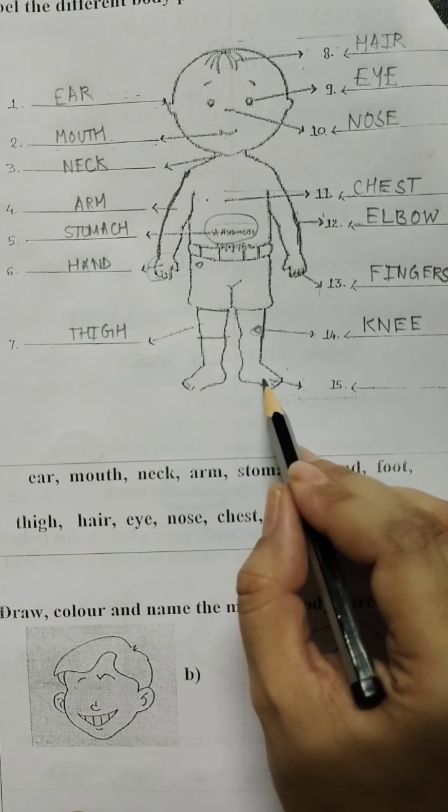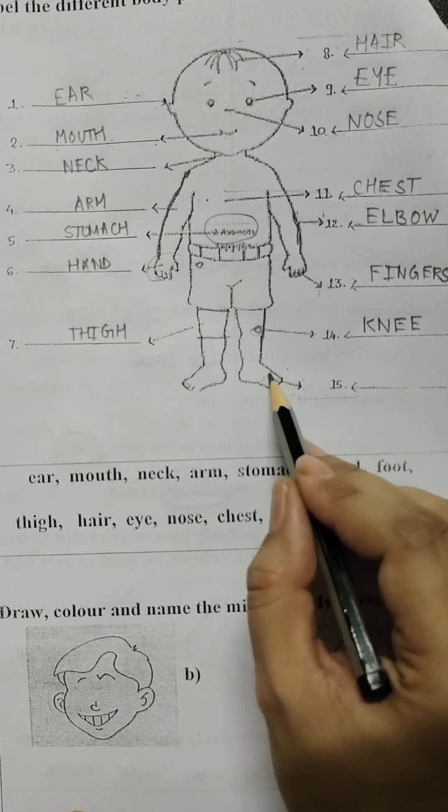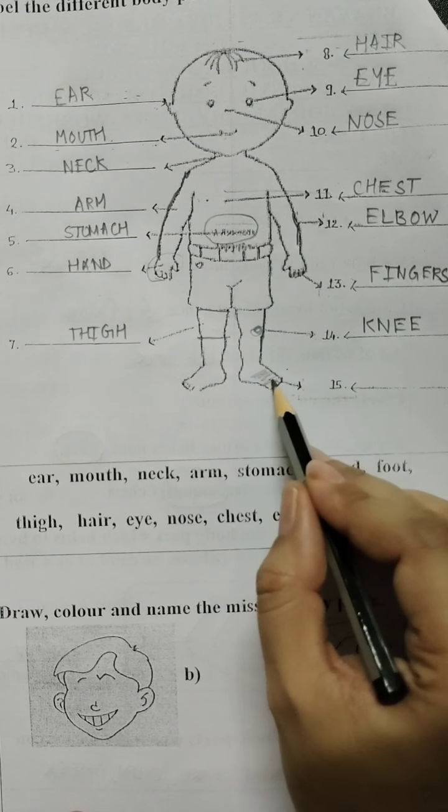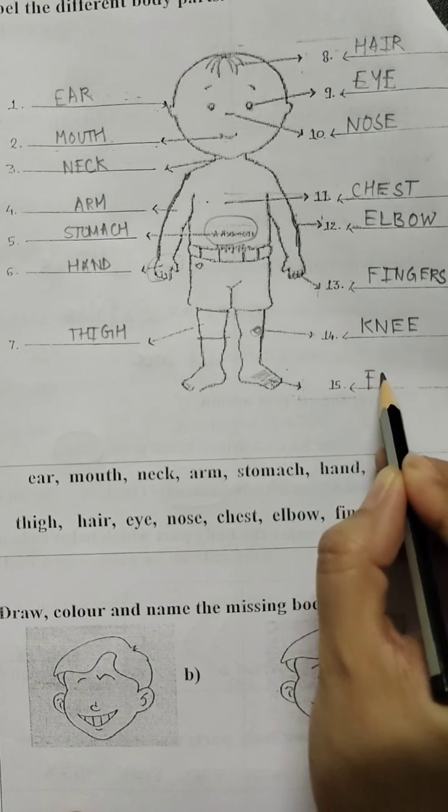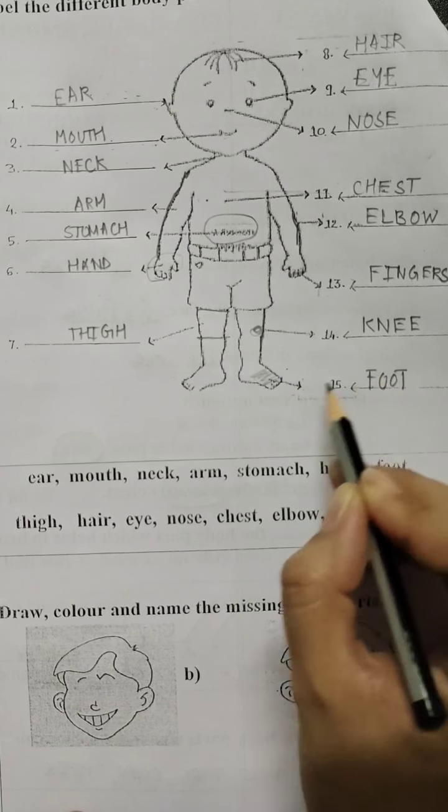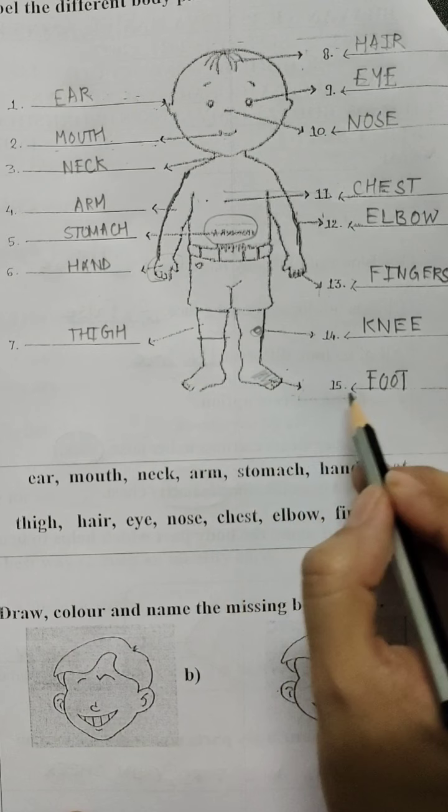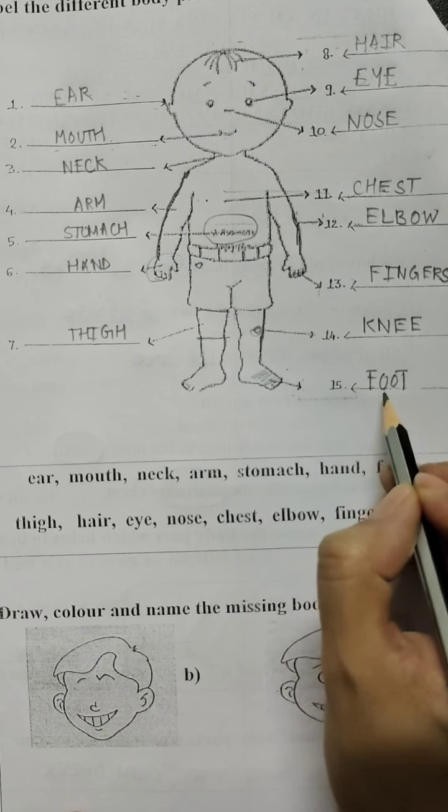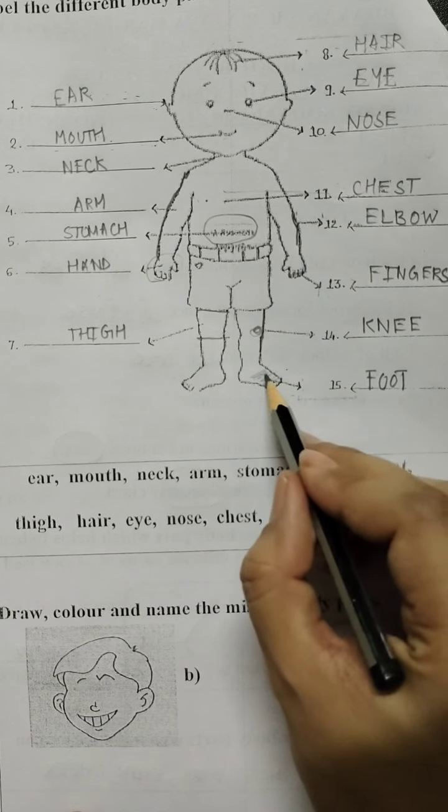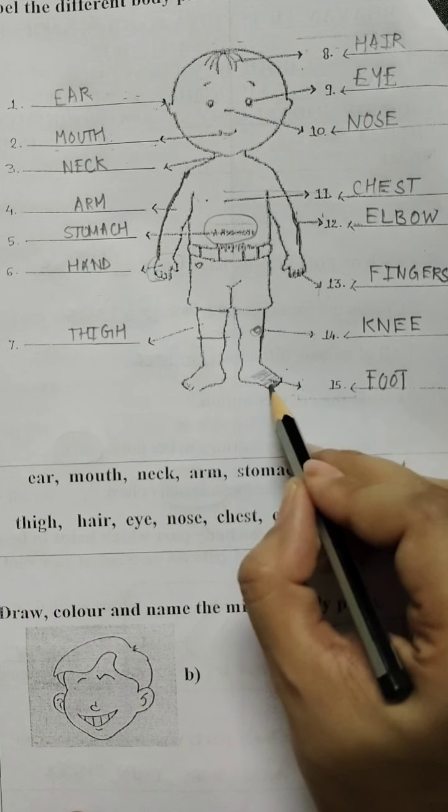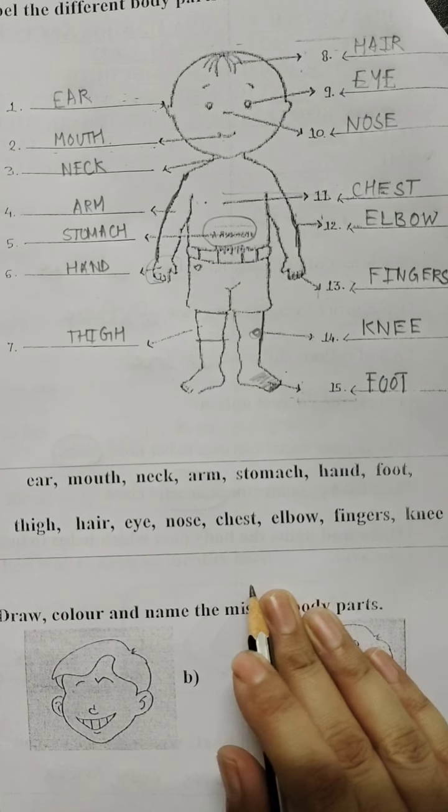Now lastly, this they are pointing towards this portion. So this portion is known as the foot. If they would have put the arrow at the starting, then we would have written toe. But they have put at the back portion of the leg, so this is the foot and the front portion is the toe.